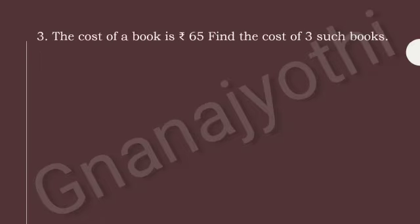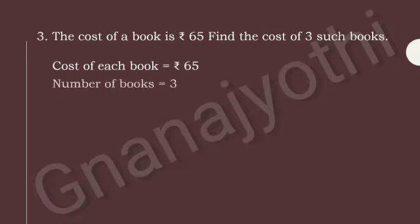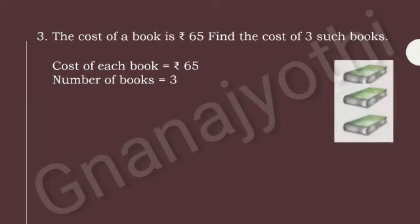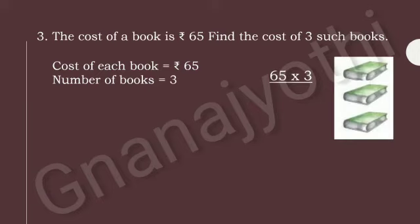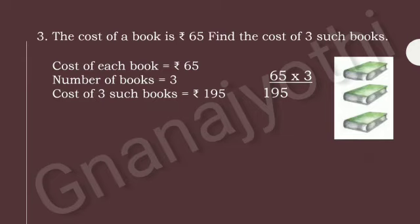Now look at the third problem. The cost of a book is Rs. 65. Find the cost of 3 such books. First, let us write: cost of each book is Rs. 65. Number of books is 3. So let us multiply 65 into 3. If we multiply 65 into 3, we get 195. Therefore, the cost of 3 such books is Rs. 195.